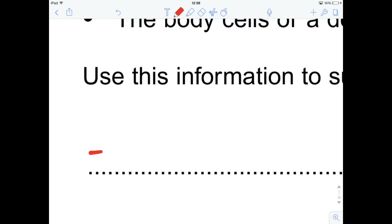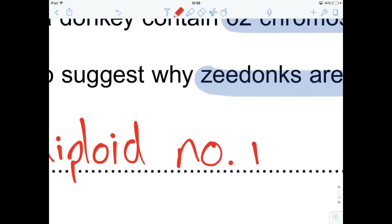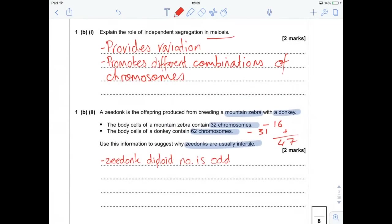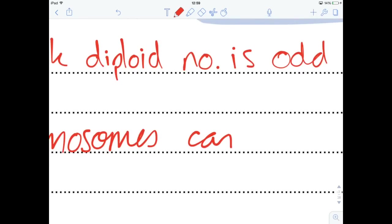So, Zedonk's diploid number is odd. There we go. So it's odd. 47. And that's a problem when it comes to chromosomes pairing up, because you've got to have an even number of chromosomes to be able to pair up, and that's why it's not going to happen. Meiosis can't occur because the chromosomes can't pair up, because there is an odd number. So chromosomes can't pair. Done.